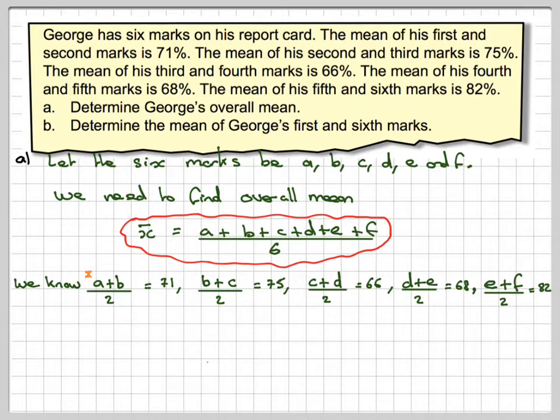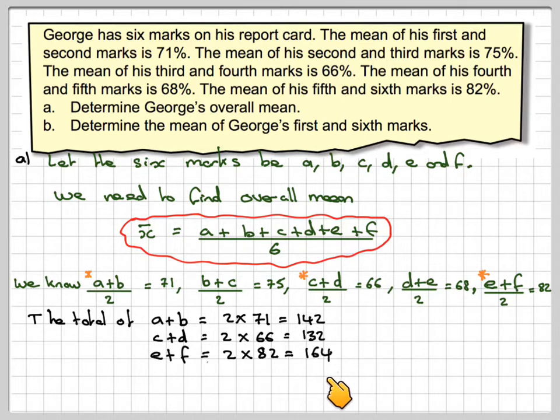Taking the first one, we know that the total of A+B must be 2×71 = 142. The total of C+D must be 2×66 = 132, and the total of E+F must be 2×82 = 164.